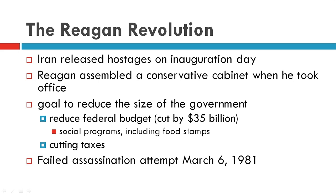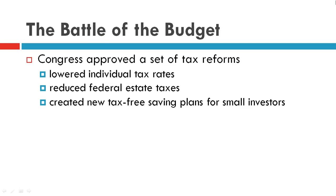There was a failed assassination attempt on March 6, 1981. Twelve days later, Reagan was back in office. Congress approved a set of tax reforms, including measures that would lower the individual tax rates.